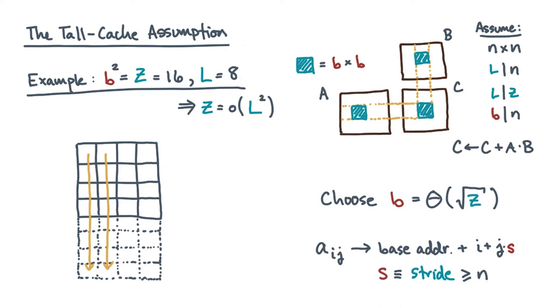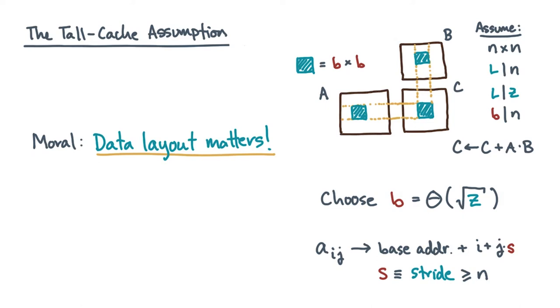Now the tall cache assumption is actually a really interesting one. It's basically an artifact of how we chose to lay out the matrices. Put differently, in a memory hierarchy model, an efficient algorithm might be linked to your choice of data structure and how you choose to lay out the data. We'll see more examples of this soon enough.